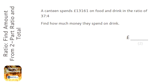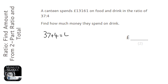We need to split up a very large amount of money to see how much each part is worth. Looking at the ratio 37 to 4, we add those together to find out how many parts we have — we've got 41 parts altogether. You can think of parts as piles of money.